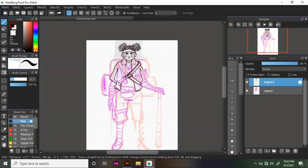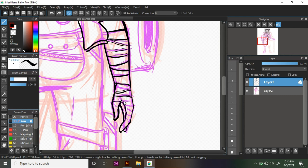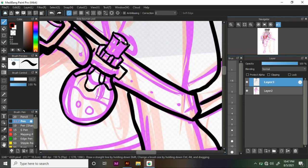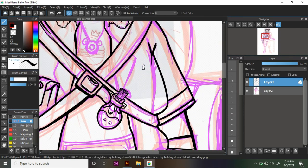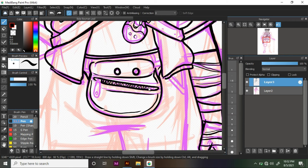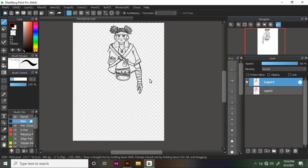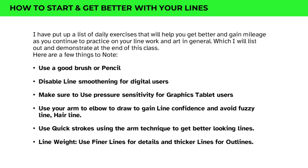Let's look at how to get better with your lines. First, use a good pencil or brush. Second, disable line smoothing for digital art users — line smoothing guides your line artificially and restricts you from actually gaining smoothness on your own. The digital medium shouldn't be an escape route; it should help you identify and correct mistakes. So disable line smoothing for any brush you're using so you can gain the real experience that comes with drawing.